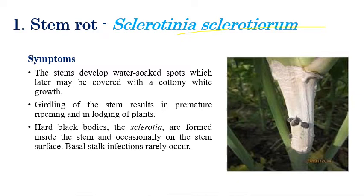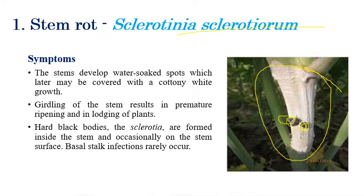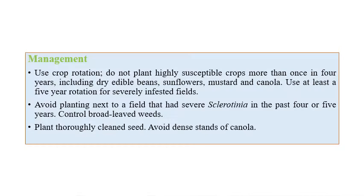First is stem rot, caused by Sclerotinia sclerotiorum. We can clearly see the stem is covered with white color mycelial growth. The mycelial growth covers the entire stem region. You can also see black color sclerotial bodies produced on the stem. Water-soaked spots along with cottony white mycelial growth can be observed on stem regions.